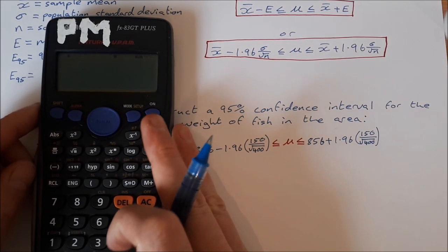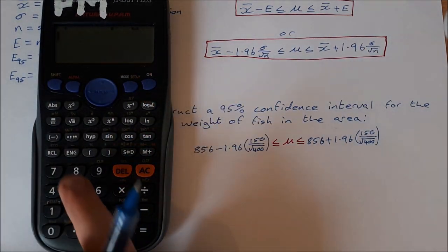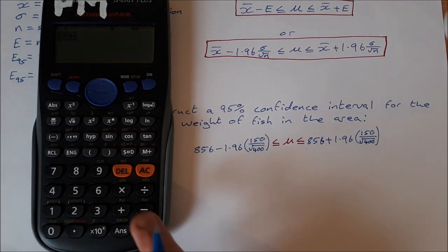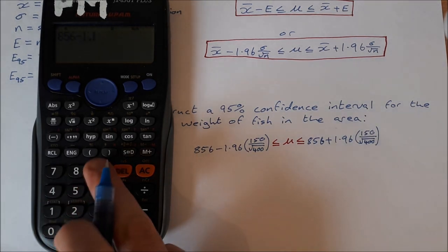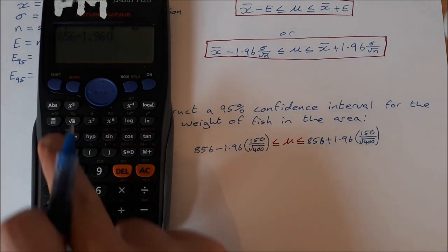We'll go to our calculator. I'll show you how to do it on the calculator. So we have 856 minus 1.96 times, now I'm going to make my fraction 150 over square root of 400, and close the brackets.